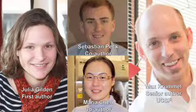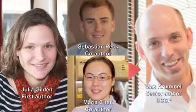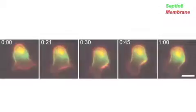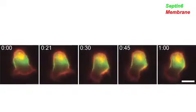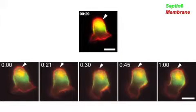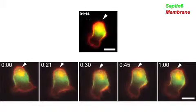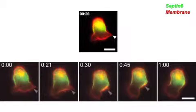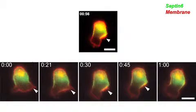To investigate how septins might control the lymphocyte cortex, Crummel and colleagues, led by graduate student Julia Gilden, looked at the localization of septins in migrating T-cells. They were finding septins assembled along the cortex in the back, the constricted uropod of migrating lymphocytes, but they're also transiently forming where the cell is blebbing and forming protrusions at the front.